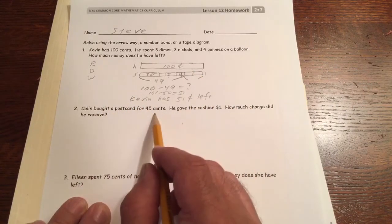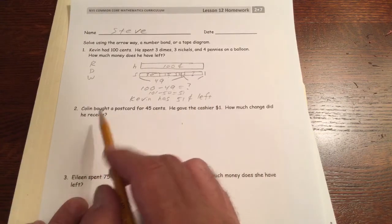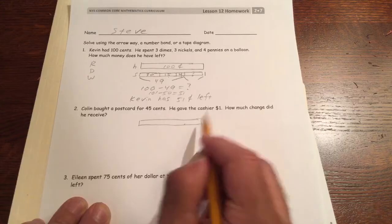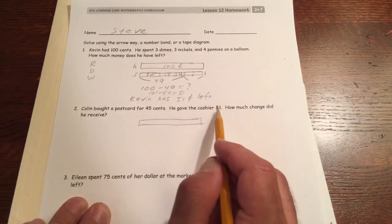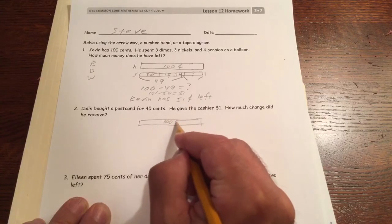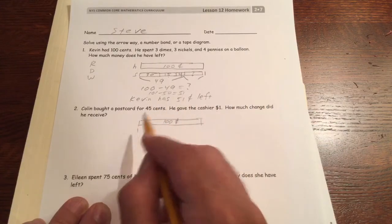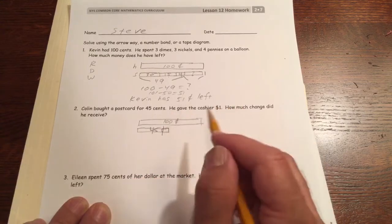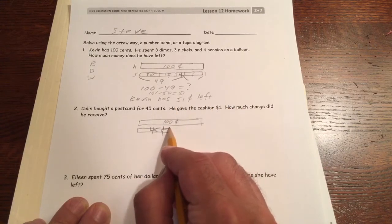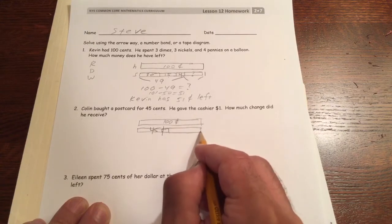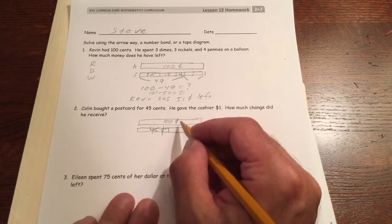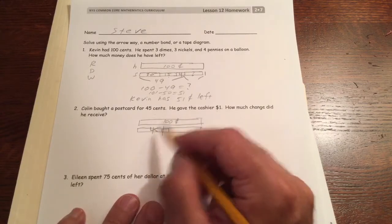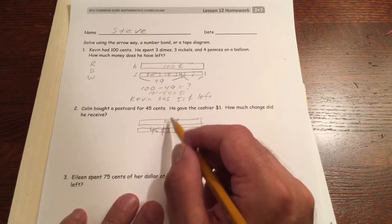Colin bought a postcard for 45 cents. He gave the cashier a dollar. How much change did he receive? Change is what you get back. He gives the cashier a dollar bill, that's a hundred cents. The postcard cost is 45 cents. Change is the extra that you paid that you're going to get back from the cashier.